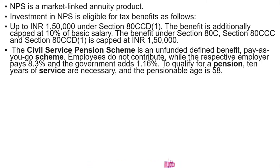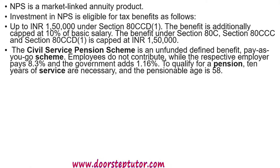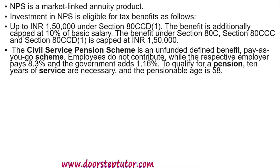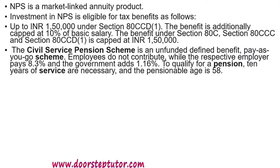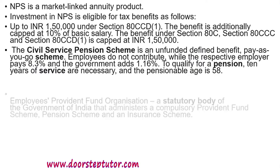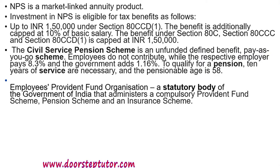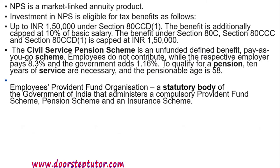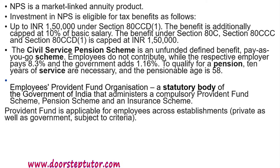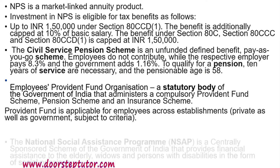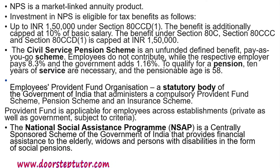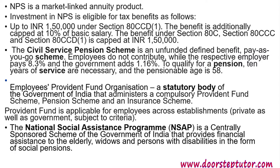The Civil Service Pension Scheme is an unfunded defined benefit pay-as-you-go scheme. Employees do not contribute while the respective employee pays 8.3% and the government adds 1.16%. To qualify for a pension, 10 years of service is required and the pensionable age must be 58. EPFO is a statutory body of the Government of India which administers a compulsory provident fund scheme, pension scheme, and an insurance scheme. Provident fund is applicable for employees across establishments — private as well as government — with different criteria for providing pension in private and government institutions.